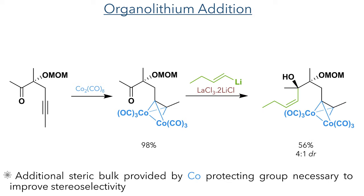This was reacted with butenyllithium and lanthanum trichloride, forming the product in a 56% yield and a 4 to 1 dr. The alkyne protection was crucial at this stage as the steric bulk was necessary to improve the stereoselectivity of the reaction.